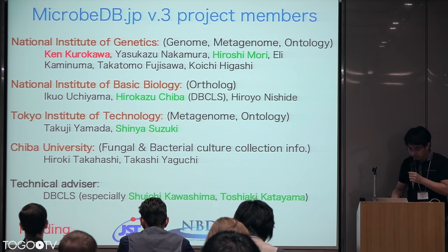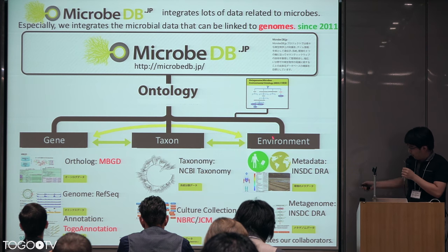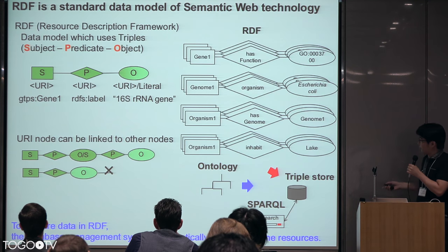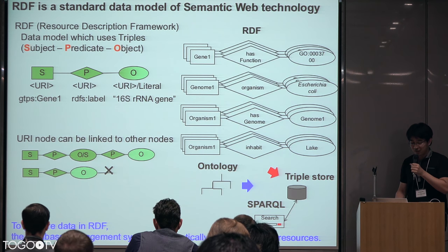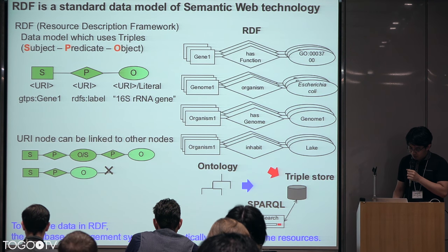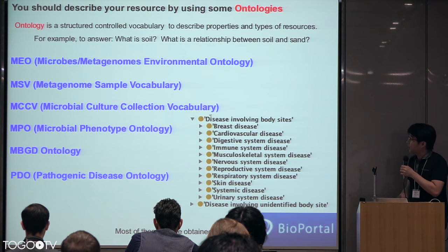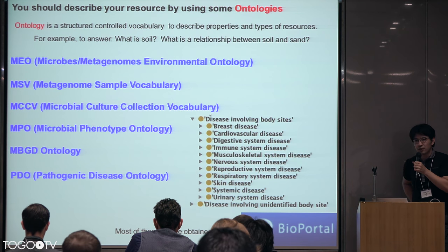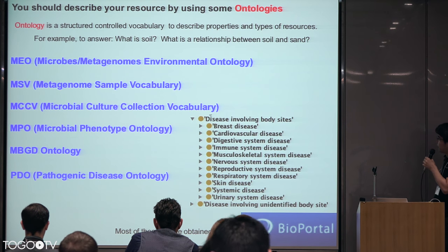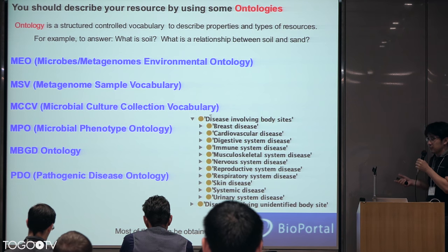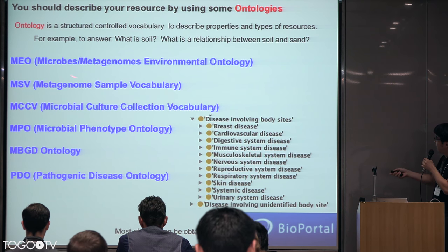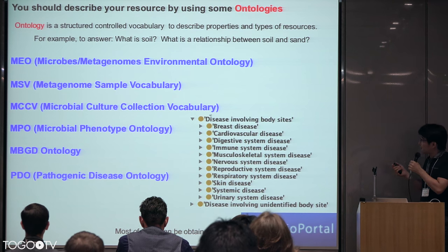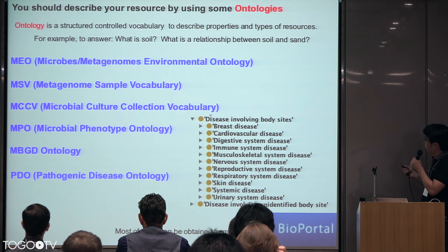Funding comes from JST and NBDC. Our database describes many kinds of microbial-related data, and we integrate these data using RDF technologies. We also needed to develop many kinds of microbial-related ontologies, because when our project started in 2011, not many microbe-related ontologies existed. So we developed, for example, MEL — the Microbial-Metagenomic Environmental ontology — which is similar to the environmental ontology but sometimes differs from it.